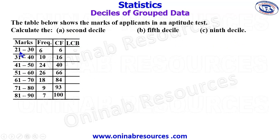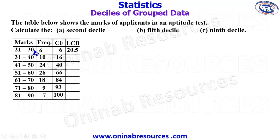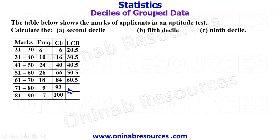Next, we need the lower class boundary, which is required for calculating the deciles. To get the lower class boundary, we average the upper limit of the previous class and the lower limit of the current class. For example, 20 plus 21 gives 41, divided by 2 gives 20.5. This is equivalent to subtracting 0.5 from the lower class limit. So the boundaries are 20.5, 30.5, 40.5, 50.5, 60.5, 70.5, and 80.5.